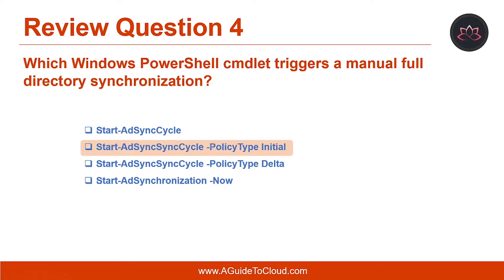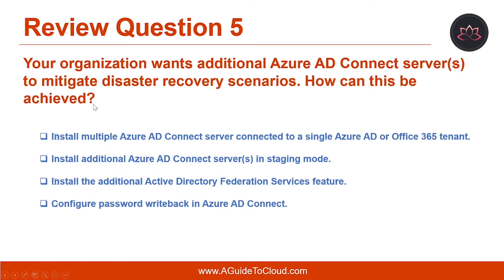Let's look at question number four. Which Windows PowerShell commandlet triggers a manual full directory synchronization? The correct answer is: Start-ADSyncSyncCycle -PolicyType Initial.